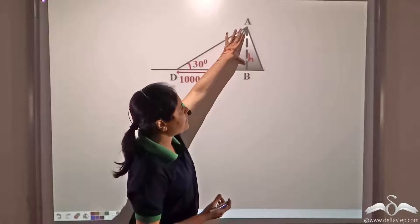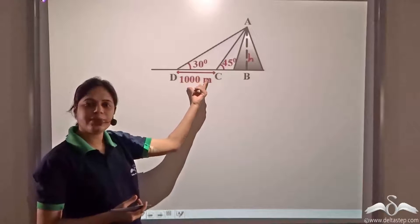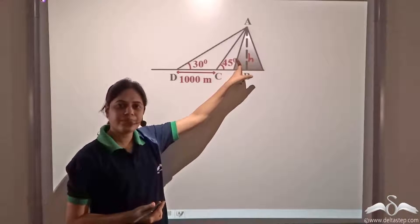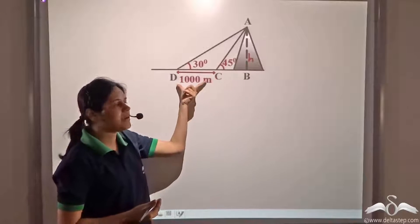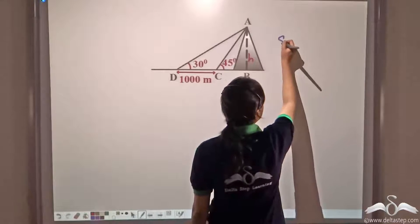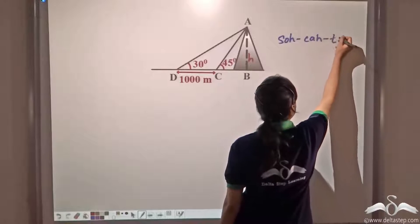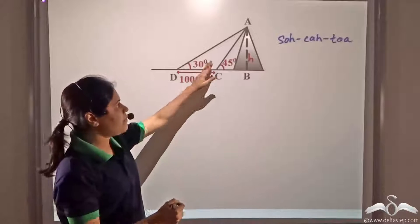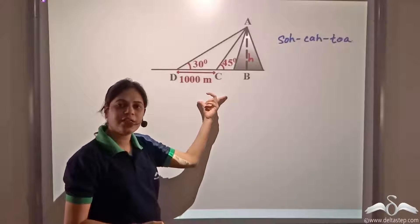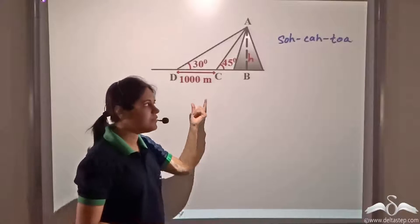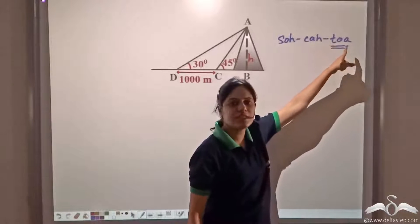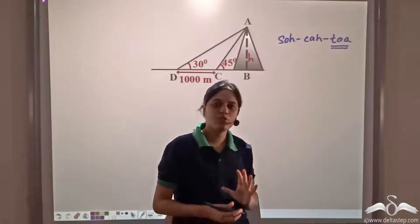We need to decide which trigonometric ratio to use. What we need to find is AB, and what is given is CD. Considering these two angles, side AB is the opposite side and sides BC and BD are the adjacent sides. Remembering SOH-CAH-TOA, the relation between opposite side and adjacent side is given by tan. So we will use the ratio tan.